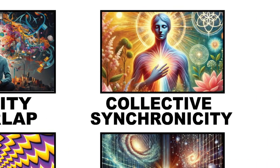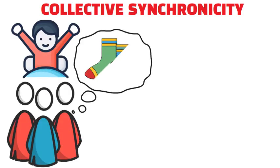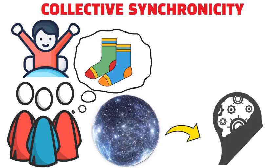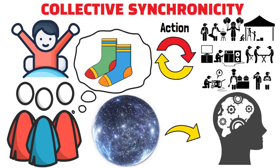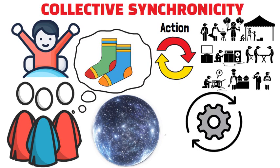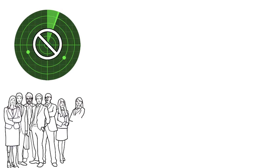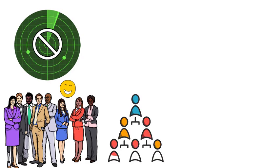Collective synchronicity. You wake up one day and realize that everyone around the globe has suddenly decided to wear mismatched socks. It's like the universe sent out an invisible memo that landed in everyone's subconscious. This is collective synchronicity in action, when a series of unrelated events mysteriously align, creating the illusion of a grand design orchestrating them all. These aren't just random blips on the radar, they're society's version of an inside joke, where we all somehow get the punchline simultaneously.